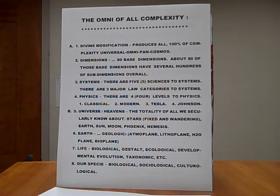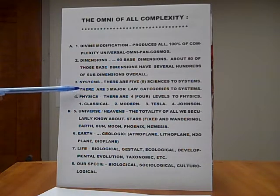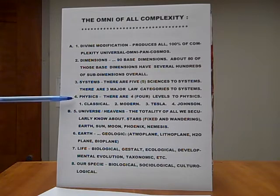Number two, dimensions. There are 90 base dimensions. About 80 of those base dimensions have several hundreds of sub-dimensions overall. Number three, systems. There are five sciences to systems. There are three major laws categories to systems.